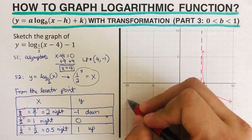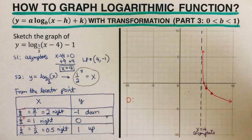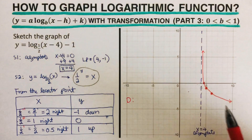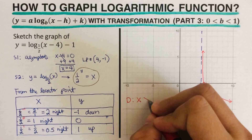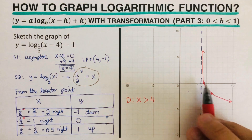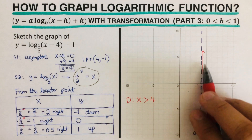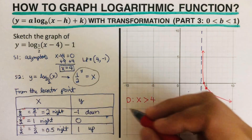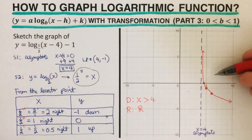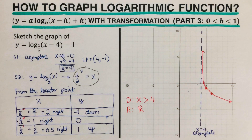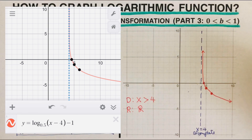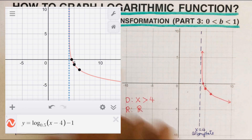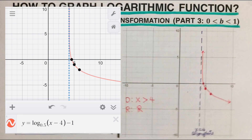We can determine the domain: this asymptote is like a wall — the graph cannot get through this boundary, which means the x values are only x greater than positive 4. The range would be all real numbers, since the graph can go up and down. On the side you will see the decimal version of this graph — both the paper version and the decimal version are the same graph.